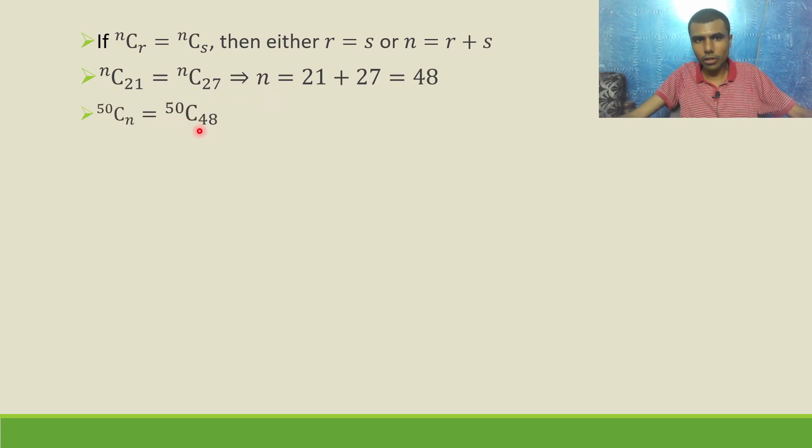Now I need to find out ⁵⁰C₄₈. ⁵⁰Cₙ is nothing but ⁵⁰C₄₈, and there is a property that ⁿCᵣ = ⁿC₍ₙ₋ᵣ₎.